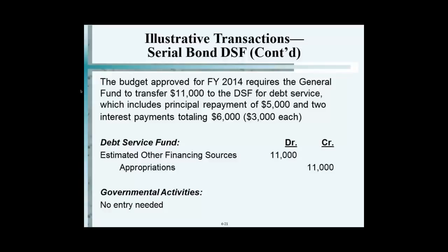Why is it 11? It's 6,000 of interest payment and 5,000 of principal. Now, this goes on through a whole cycle.